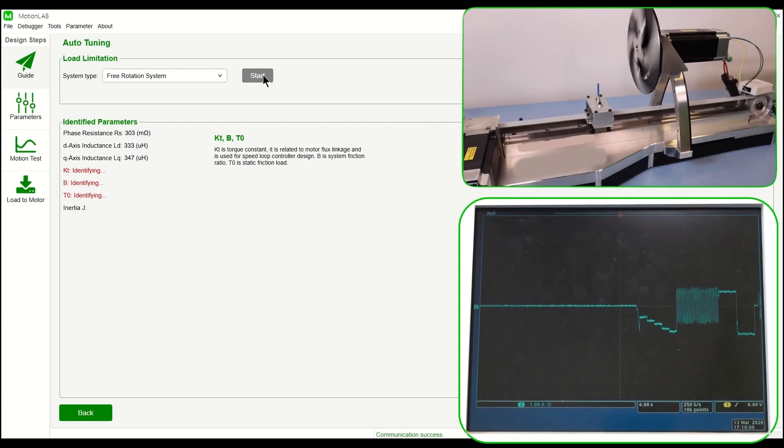As part of the EZMotion smart motor solution, our control modules are capable of automated motor system and control loop parameter identification.